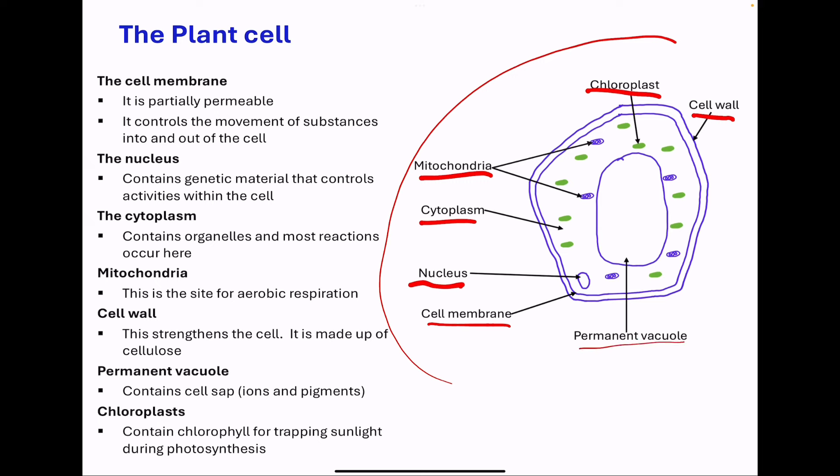Then we have the permanent vacuole. This contains pigments and ions, which we usually call the cell sap, and it helps in the movement of water across the cell.